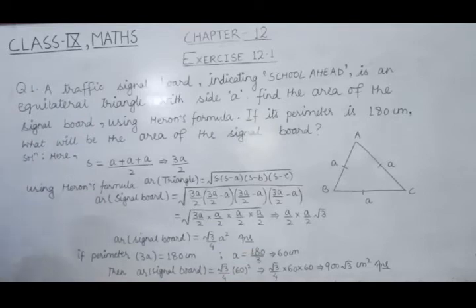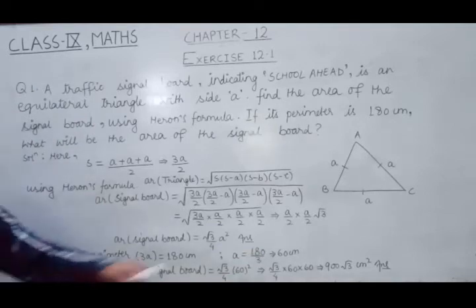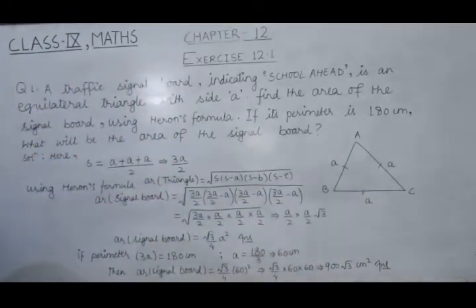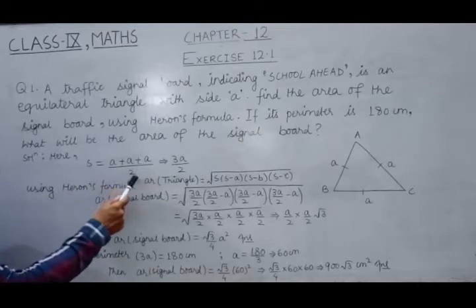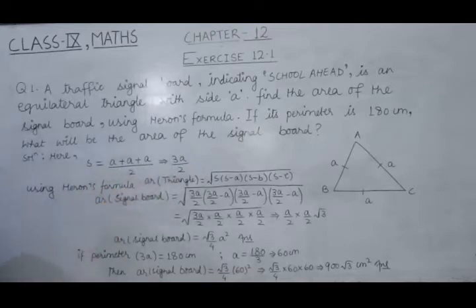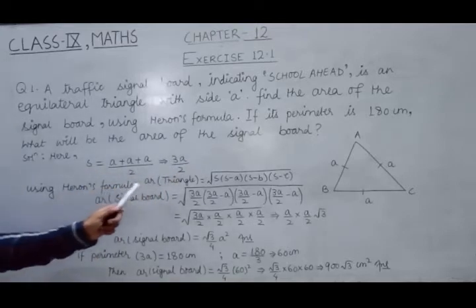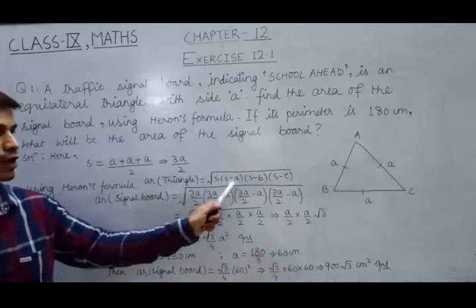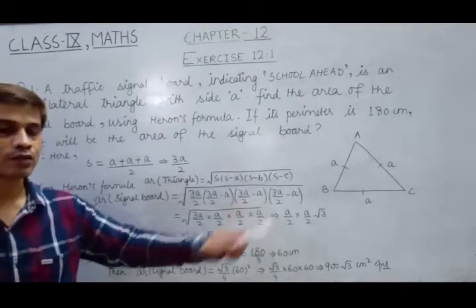And this semi-perimeter s we mean half of the perimeter. That's why sum of all 3 sides needs to be divided by 2. So this s becomes a plus a plus a upon 2, which results to 3a upon 2. Now using Heron's formula, which is area of triangle equals to under root s times s minus a times s minus b times s minus c.